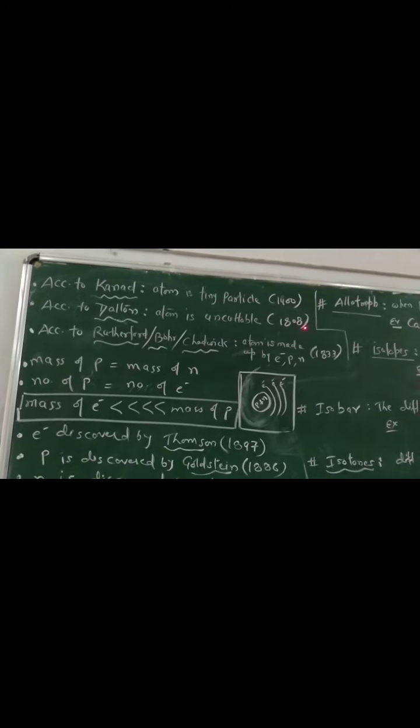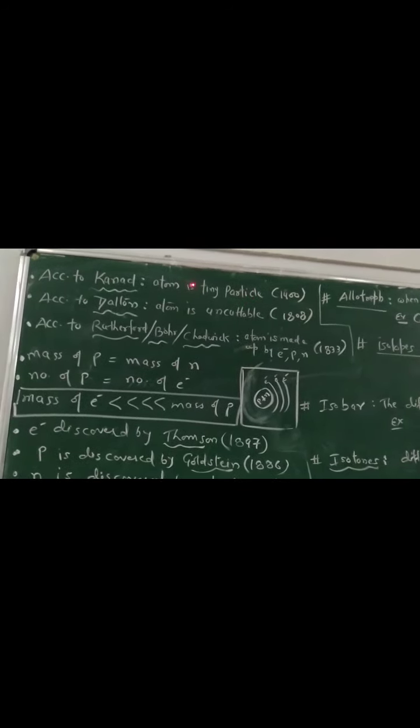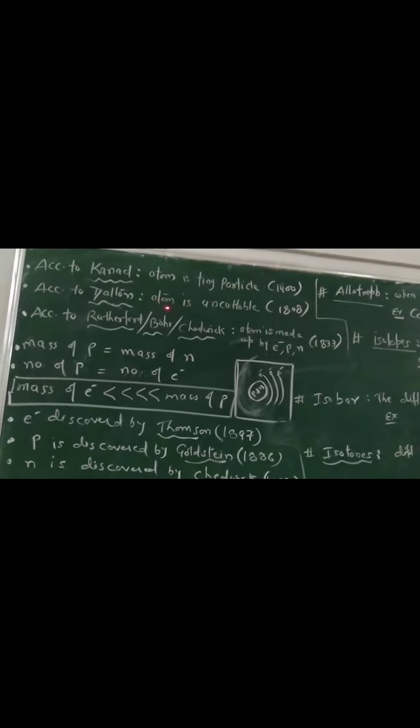After that, in 1808, this theory became valid. People paid attention and there were more discoveries. Dalton said many things, but the key point is this: atom is a tiny particle but it is uncuttable, meaning you cannot cut it. It is so small. This theory was valid for general knowledge.